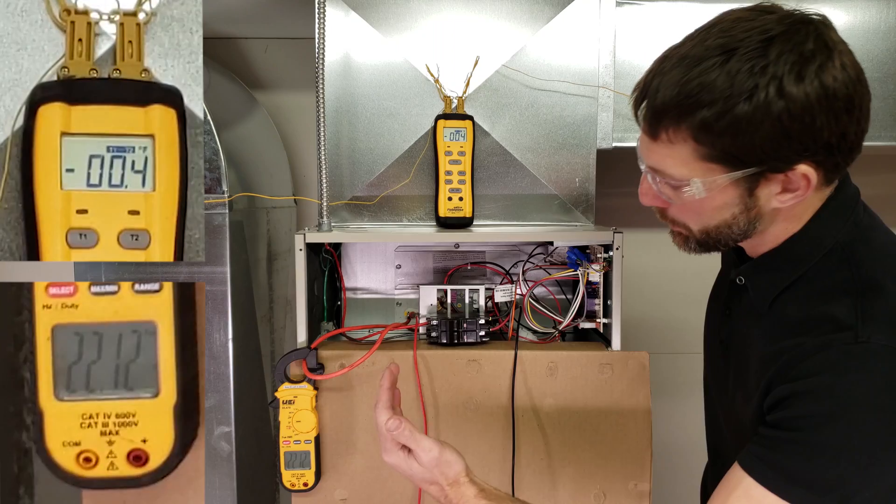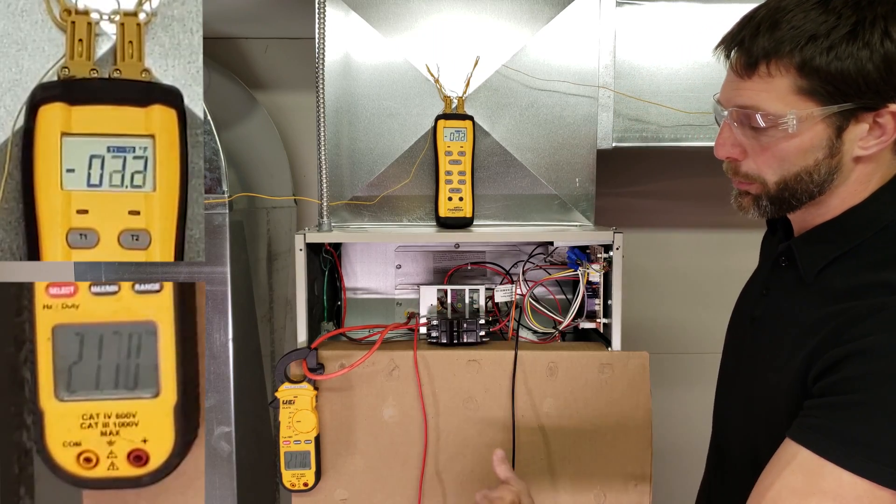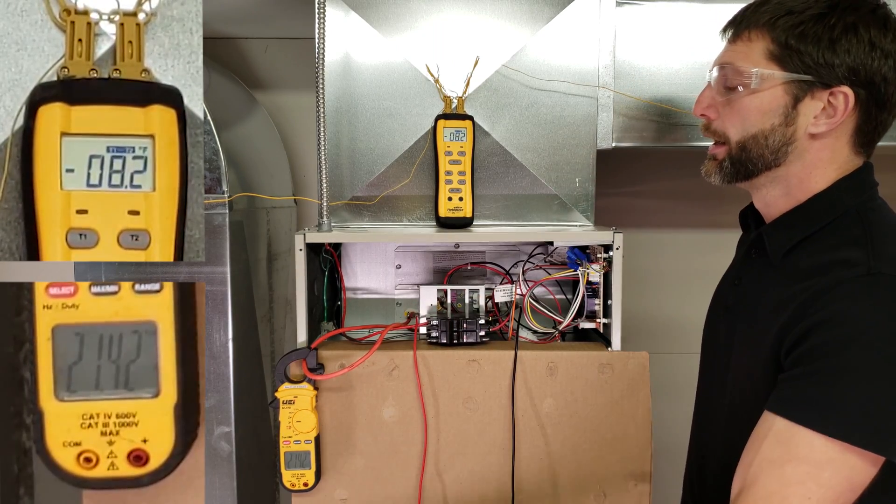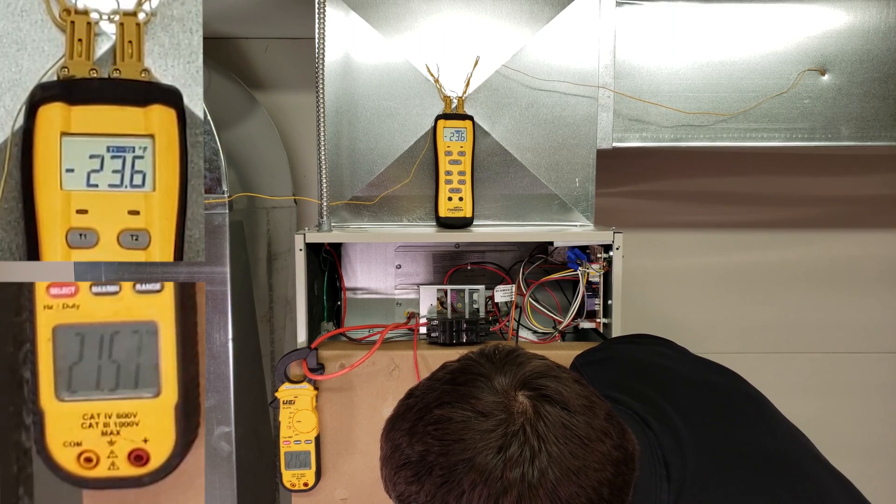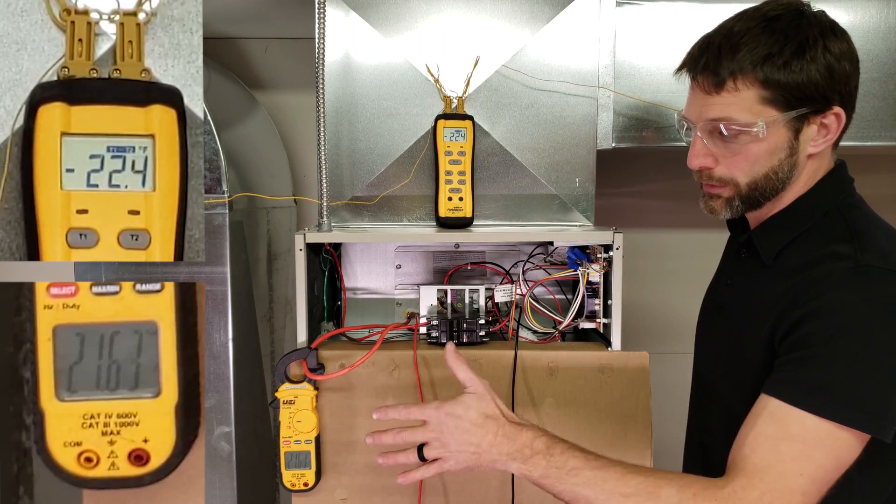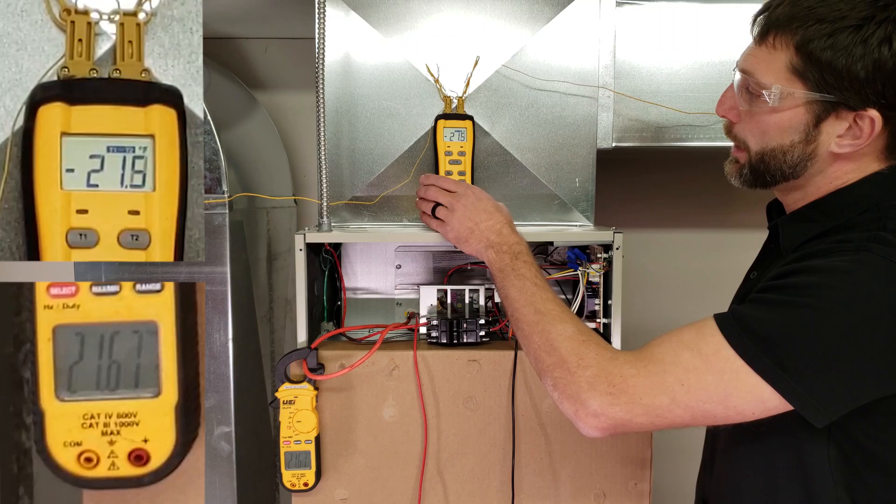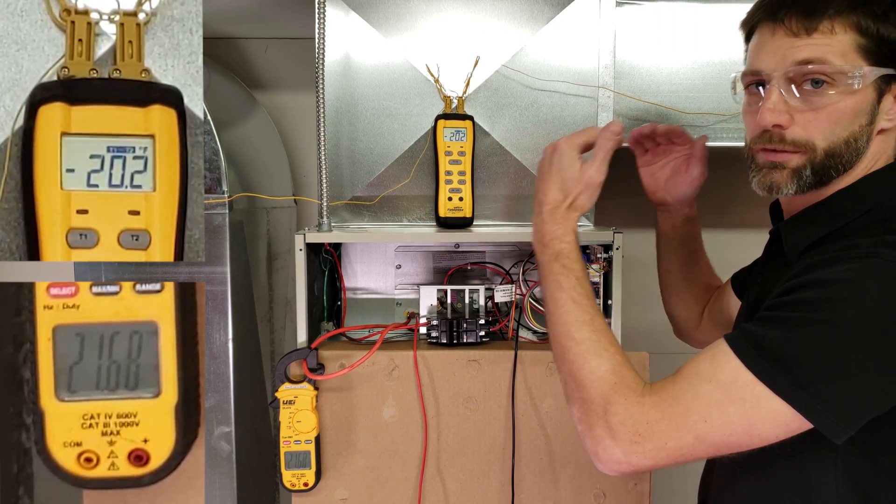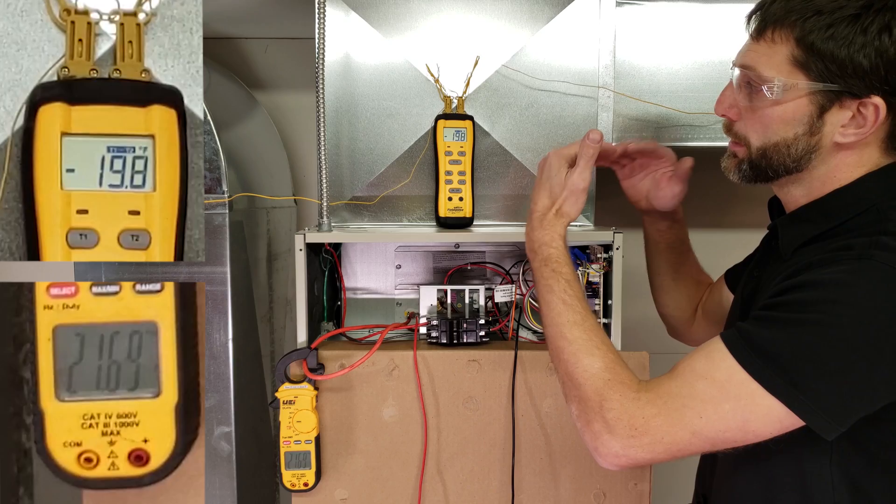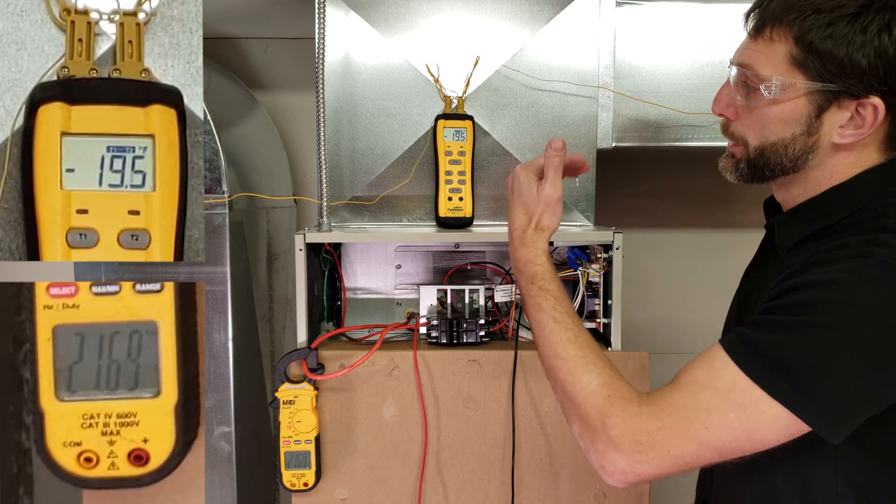So first thing, the electric resistance is getting powered, and then the blower motor is going to turn on. And let's check our amperage looks to be right about 21.6 amps. And our temperature differential, what we're looking for is that we're looking for it to settle in into a constant temperature differential.